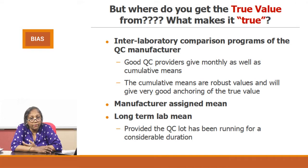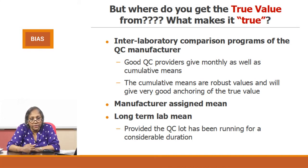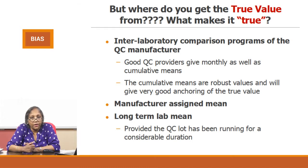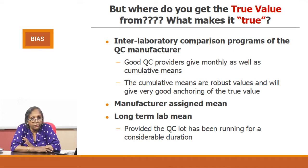To recap, there are three mechanisms to understand your bias. First, your LJ charts will alert you to a development of bias through emerging populations and shifting accuracy. Second, your EQA program will alert you to the possibility of bias. Third, and most importantly, your peer group — you should try to obtain the true value from the peer group by asking for peer group comparisons when purchasing your QC material.